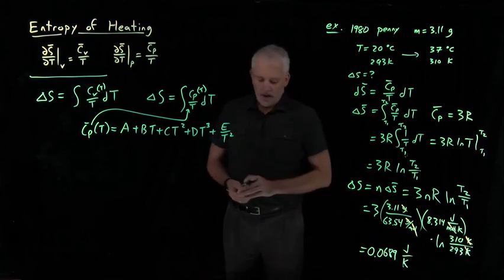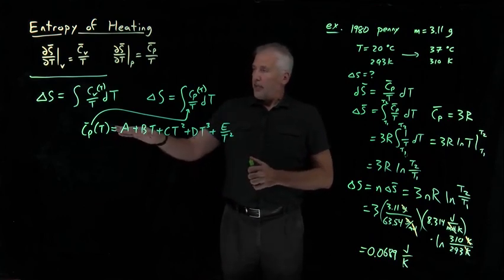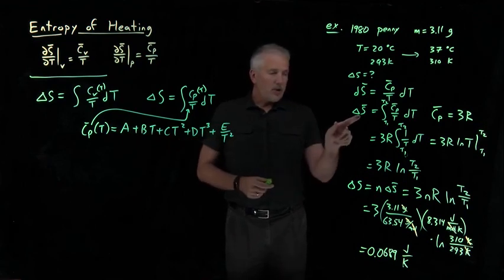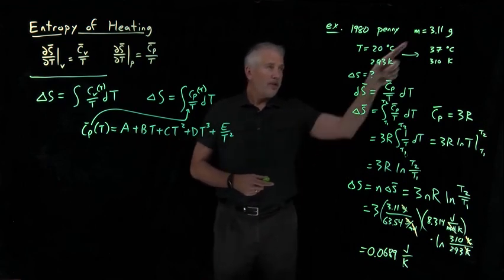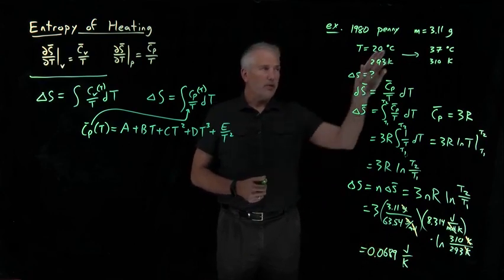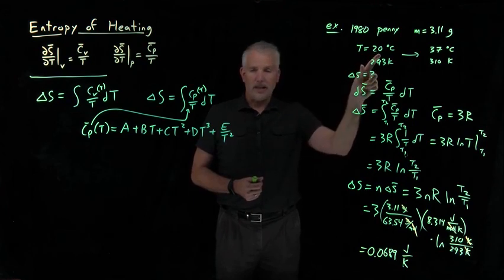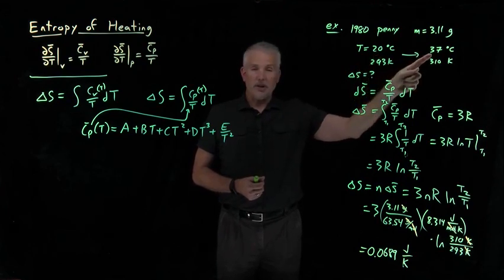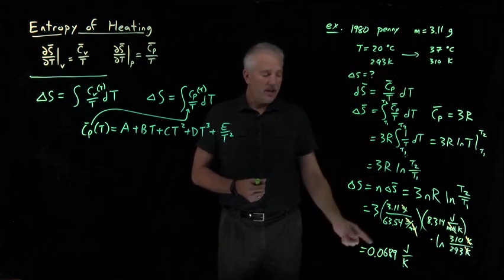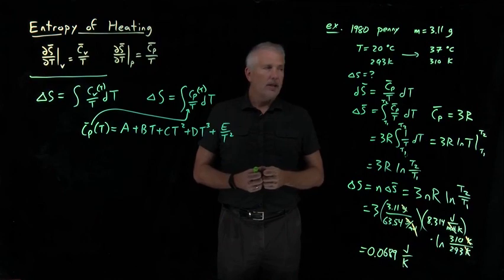We have this procedure for evaluating the entropy, in particular how much the entropy is changing. I can tell you the entropy of this penny changed by 0.0689 joules per kelvin as I warmed it up. What I can't tell you right now is how much entropy it had at the beginning or even how much entropy it had at the end. All I know is the entropy changed by this amount. It turns out we can also say something about the actual amount of entropy that an object has, so we'll consider that next.